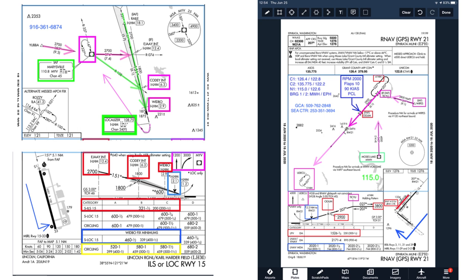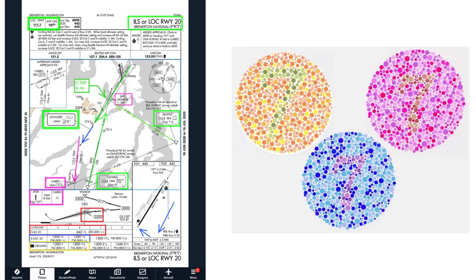Annotating charts makes you slow down, review charts carefully, and consider how you'll set up avionics and the airplane for procedures, whether they depict a departure, an arrival, or an approach. So if you're training for the instrument rating, using new avionics, or flying to unfamiliar airports, consider how you can use these suggestions to make important details stand out on IFR charts.